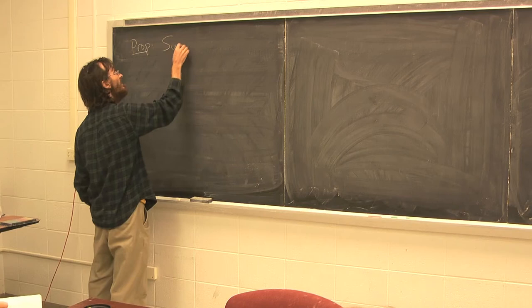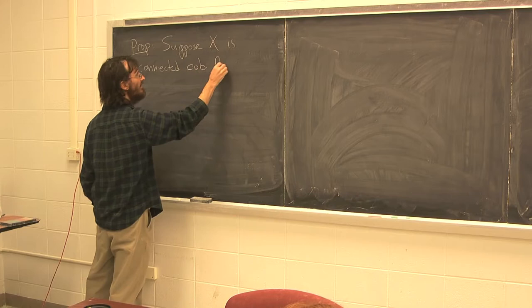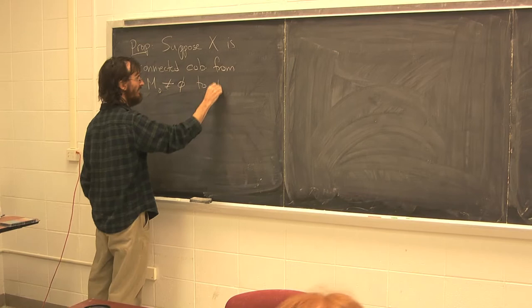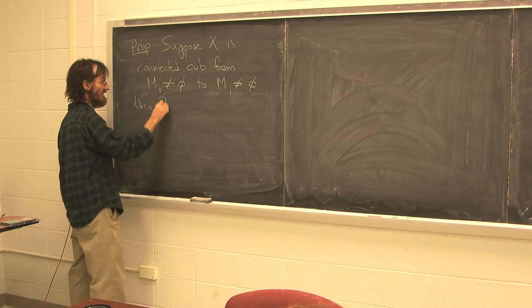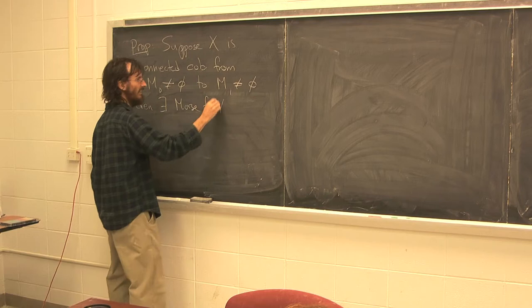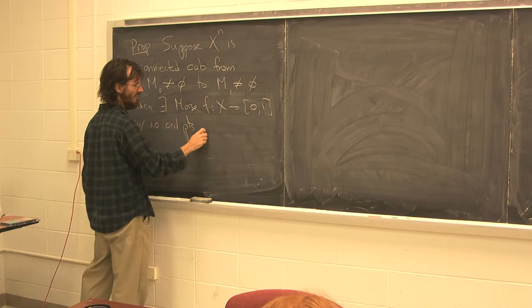Suppose that X is connected from non-empty M0 to a non-empty M1. So if the bottom and the top are not empty, and the whole thing is connected, then there exists a Morse function f from X to [0,1]. This is an n-dimensional manifold with no critical points of index 0.